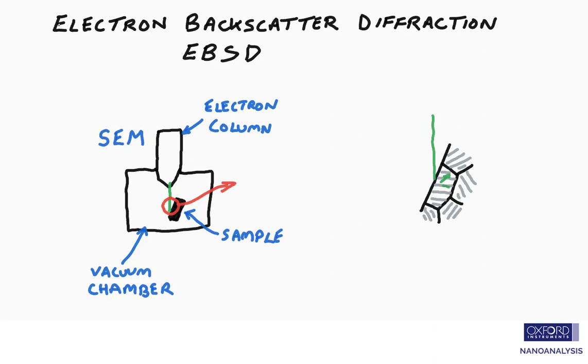So when the electron beam strikes a sample, we get scattering of those electrons. There may be a little energy loss, but it is close to an elastic event.